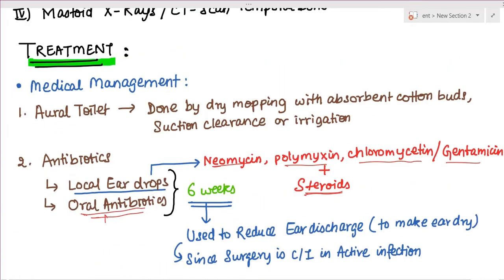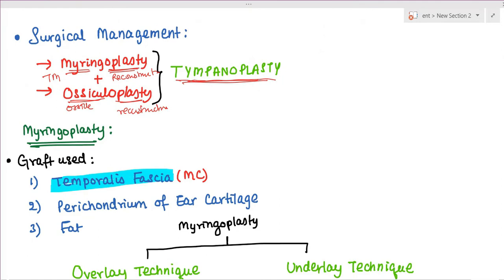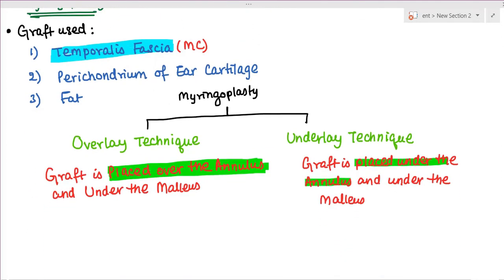For grafts used, temporalis fascia is the most commonly used type in myringoplasty. You can also use perichondrium of ear cartilage or fat.